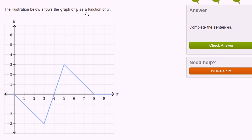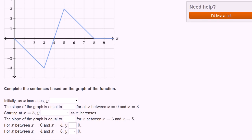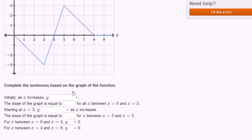The illustration below shows the graph of y as a function of x. That's this graph right over here. They start to ask us some questions: complete the sentences based on the graph of the function. This axis is our y-axis, our vertical axis. The horizontal axis is the x-axis.